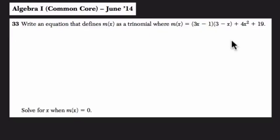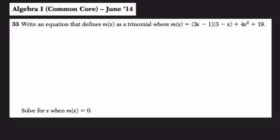Okay, pause this video and try the problem on your own. So in this problem, I think the language is a little bit awkward, but let's decipher what it's saying. Write an equation that defines m(x) as a trinomial, where m(x) equals (3x - 1)(3 - x) + 4x² + 19.